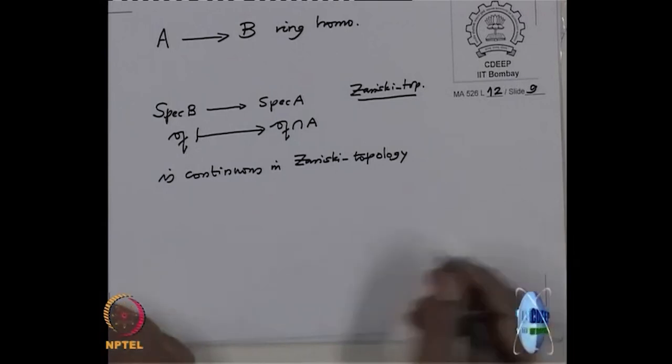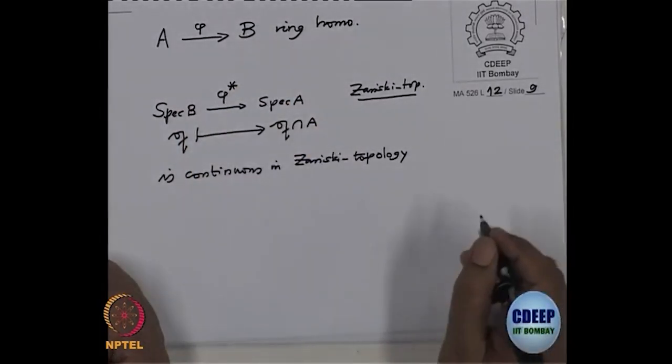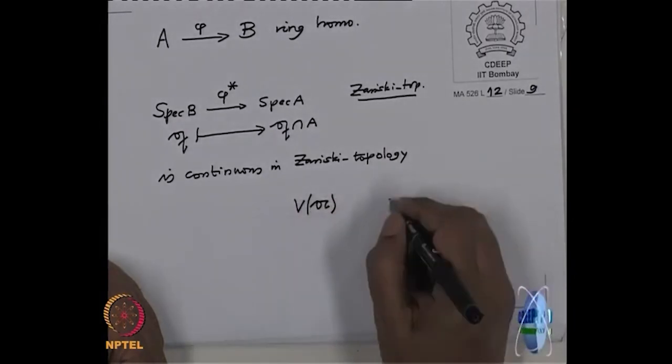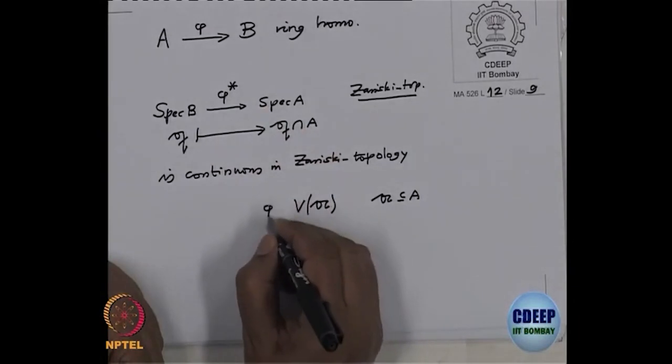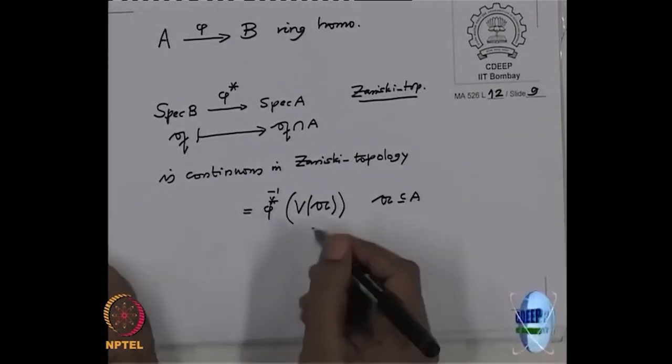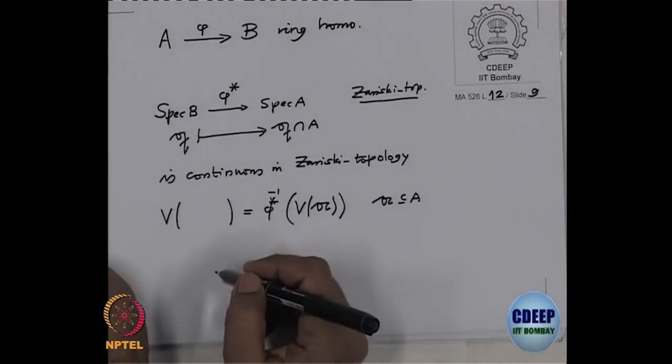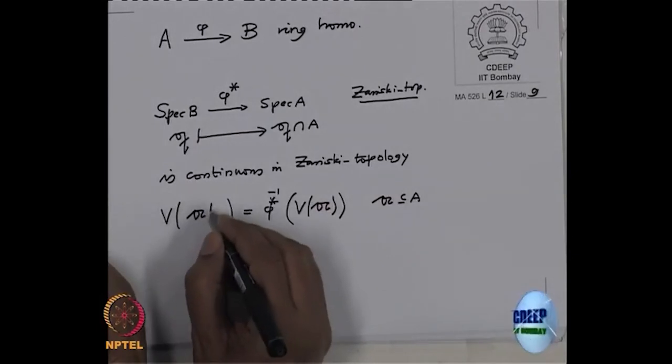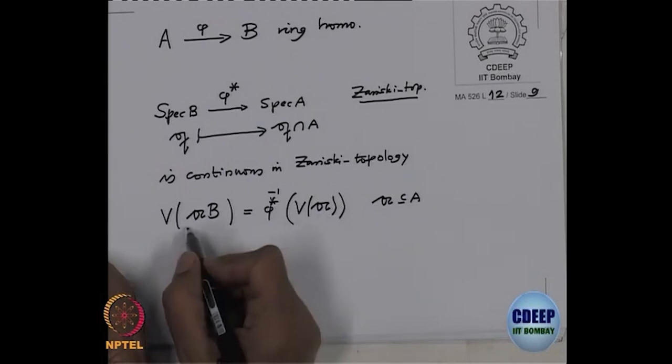So that means we want to check. So let us give some names to this. This is phi. Then usually this is called phi star. And a closed set we know is typically of this form, V(a), where a is an ideal in A. So when I want to pull it back under this, so phi star inverse of this. And what will it be? See you need to prove it is a closed set. So V of somebody. But that should be an ideal. So who is a likely candidate? A. You take this ideal A and extend it to B. So A times B. Either check this. This is easy to check because you can take one element here and check it is here and the other way also.